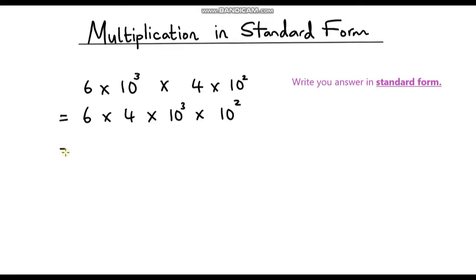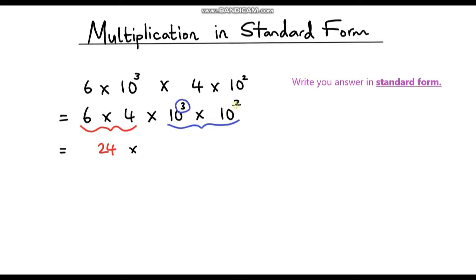Now let's work this out. First I'm going to focus on 6 times 4 — that's nice and easy. 6 times 4 is 24. And now we're going to multiply 24 by 10 to the power 3 times 10 to the power 2. This is where your laws of indices come into play. Whenever you multiply numbers with the same base, all you need to do is add the indices together. So 10 to the power 3 times 10 to the power 2 is 10 to the power 3 plus 2, which is 5.